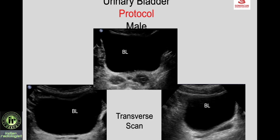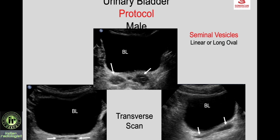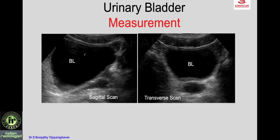On the transverse sweep you also see the prostate and seminal vesicles. Seminal vesicles vary depending on abstinence and age — they may be thin in a child, empty, or full with abstinence. Normal seminal vesicles are seen as linear or long oval echo-poor structures of variable size depending on age and abstinence, and there may be some compartments.